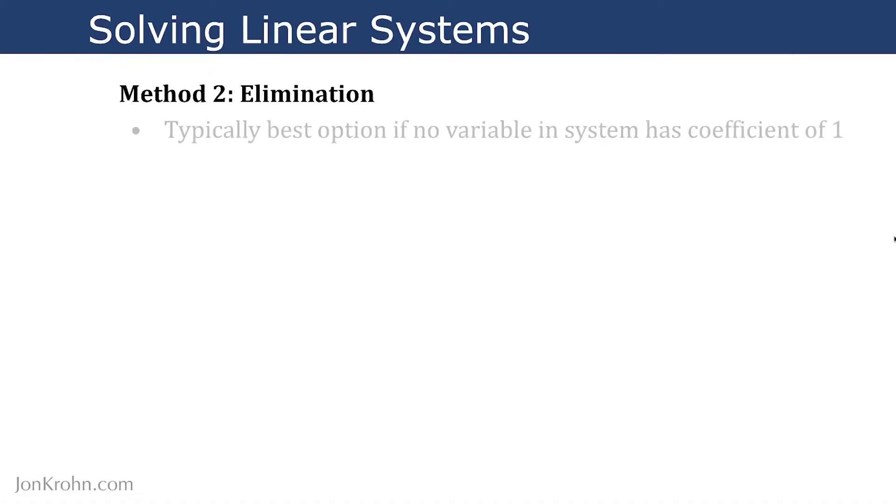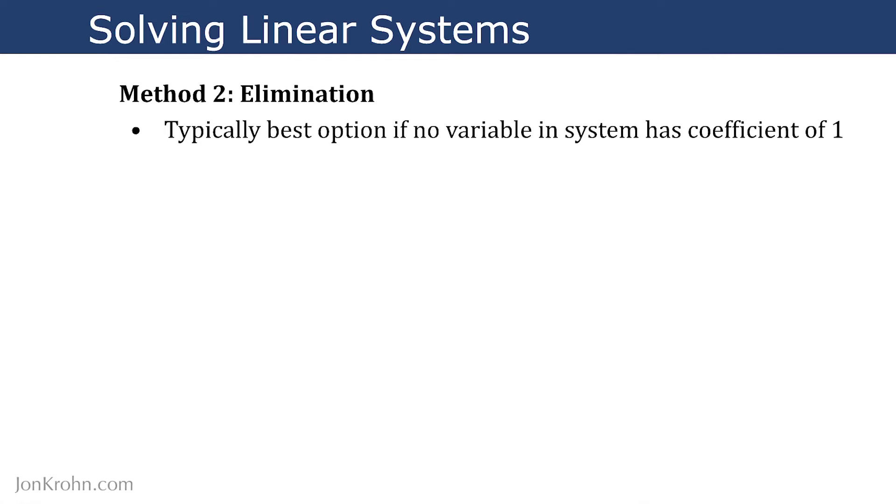With the elimination method, this is typically the best option if no variable in the system has a coefficient of 1. If there was a coefficient of 1, we could use the substitution method. But if it doesn't have a coefficient of 1, then we can take advantage of the addition property of equations to eliminate variables.